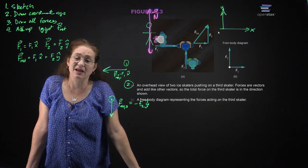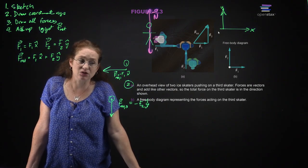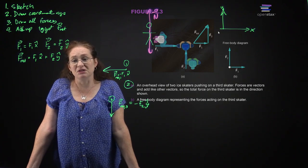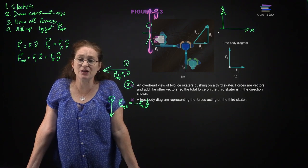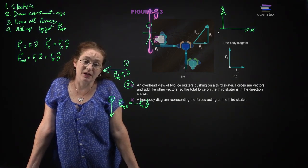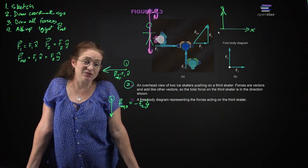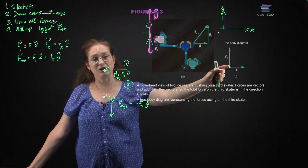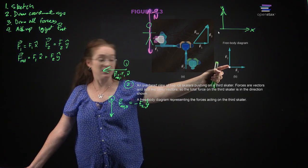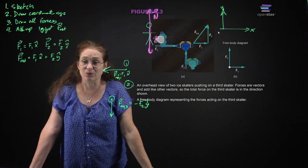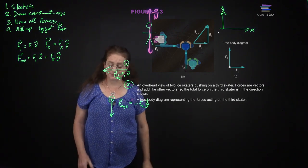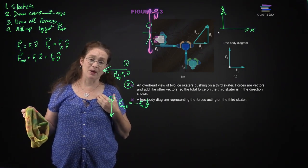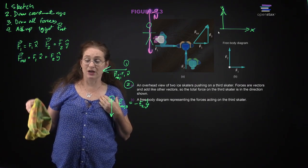The problem asked was what is the net force on skater three, so you wouldn't technically need the other diagrams. But if asked to describe trajectories of all three skaters, you would need all three. Different instructors grade these differently. What I'm looking for is that it's an accurate tool to help you solve the problem.